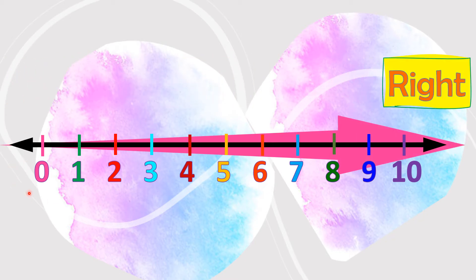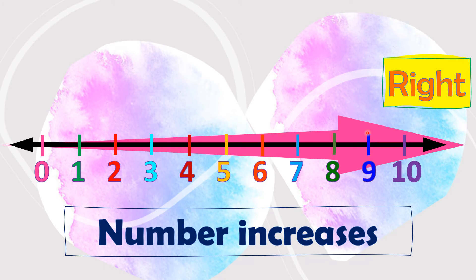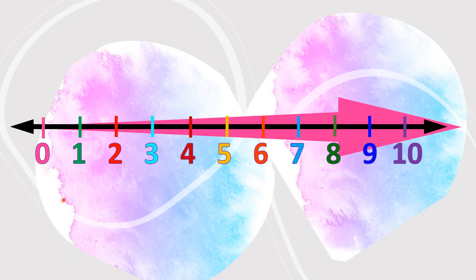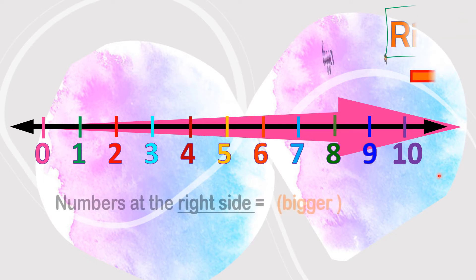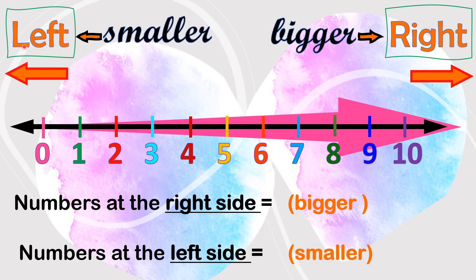The numbers increase as one moves from left to right. As we move further to the right of 0, the number increases. Looking at the number line, we can say that numbers at the right side are bigger, while numbers at the left side are smaller.